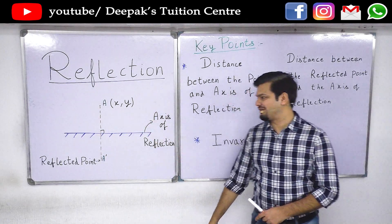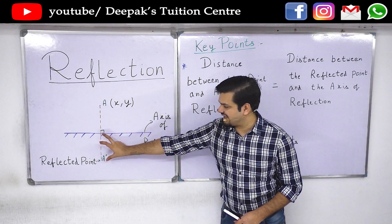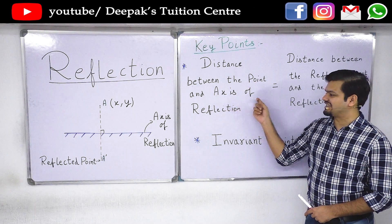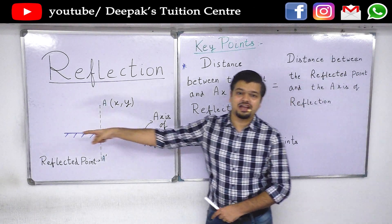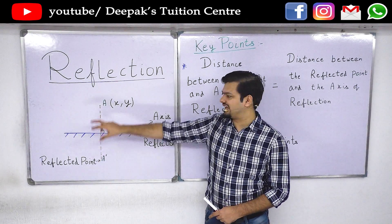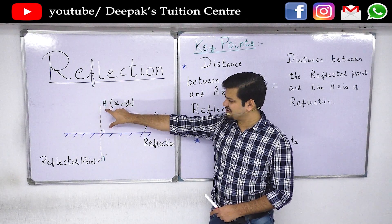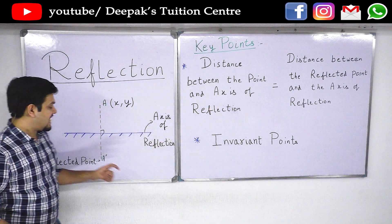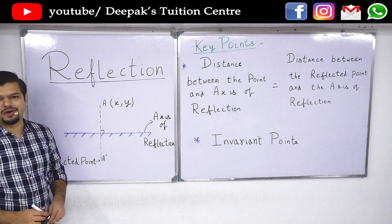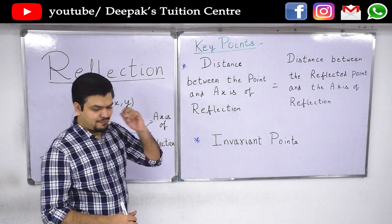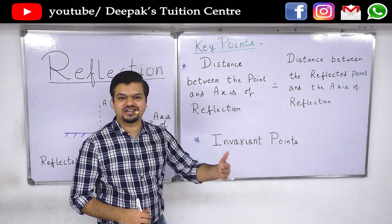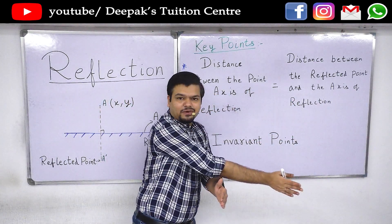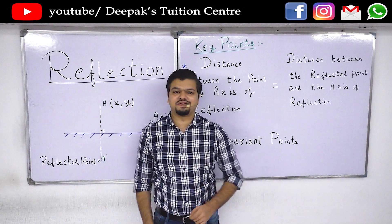The second thing to remember: the distance between the original point and the axis of reflection, and the distance between the reflected point and the axis of reflection, will be equal. So the reflected point will be as far behind the axis of reflection as the original point is in front. This gap will be equal to that gap — this is very helpful information.